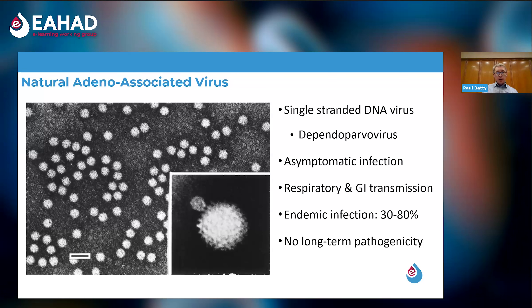The naturally occurring virus on which these vectors are based is called adeno-associated virus. It was originally found as a contaminant in adenovirus preparations in the laboratory. It is a small, single-stranded virus of the family Dependoparvovirus, as seen in the electron microscopy images. Many people will have had an infection with this virus during early childhood or adolescence — it is generally asymptomatic and thought to be transmitted by respiratory and gastrointestinal routes. Population studies show infection rates ranging from 30 to 80 percent, with no associated long-term significant illness, making it an attractive vehicle for genetic material delivery.